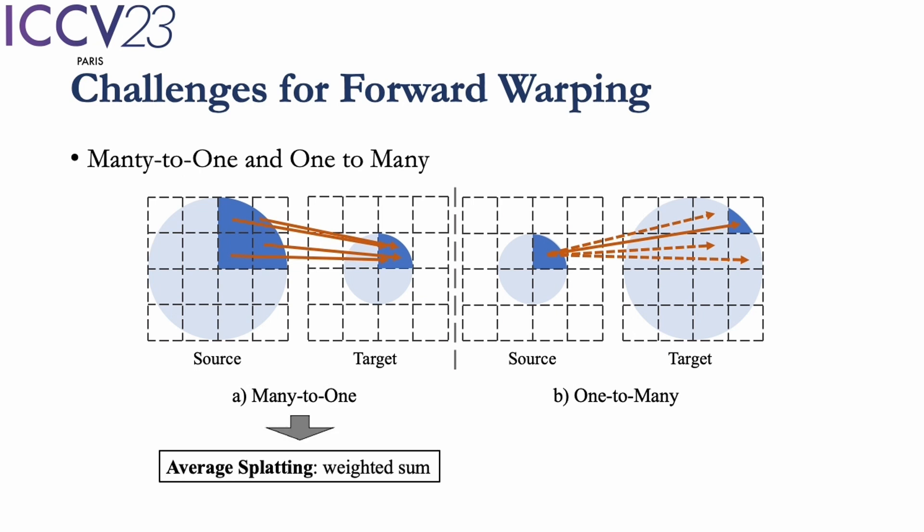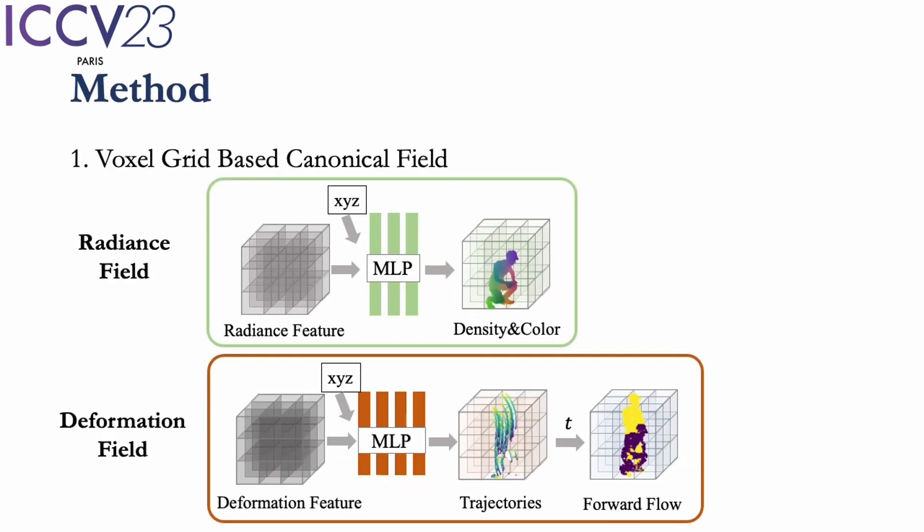To solve the many-to-one issue, we use average splatting, which is essentially a weighted sum operation. To solve the one-to-many issue, we propose an in-paint network, which is a new net structure based on 3D convolution, to in-paint the missing area. In the following sections, we introduce the pipeline of our method.